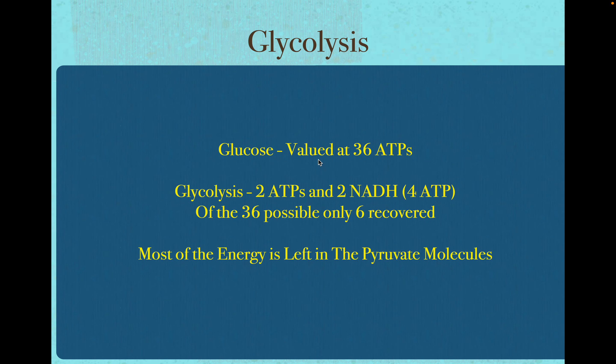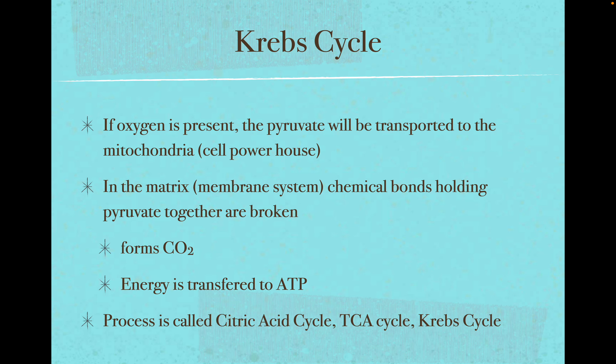Glucose is valued at 36 ATPs. So in glycolysis we got a couple, but most of the energy in glucose is still in those pyruvate molecules. We need to break down those pyruvate molecules if we want to get our total of 36 ATP. That happens first in the Krebs cycle if oxygen is present. The Krebs cycle itself doesn't require oxygen, but electron transport does, and the Krebs cycle won't work if electron transport isn't working.